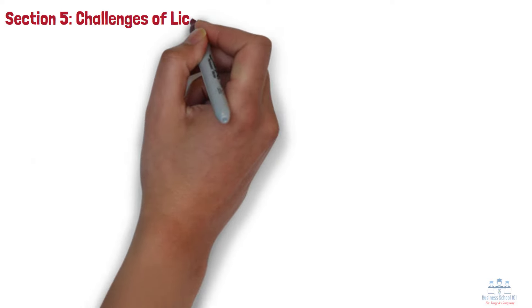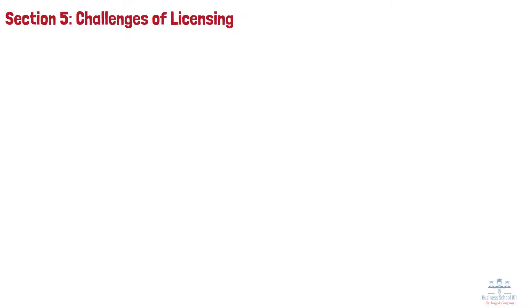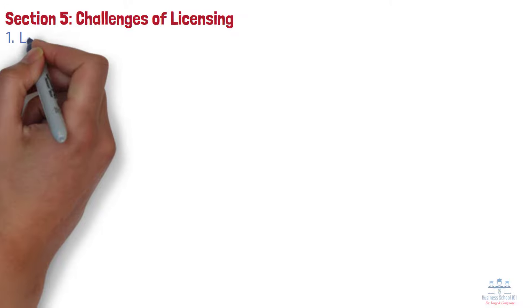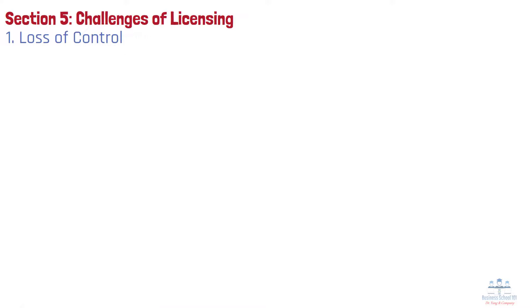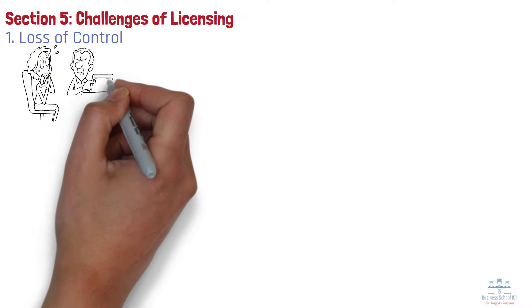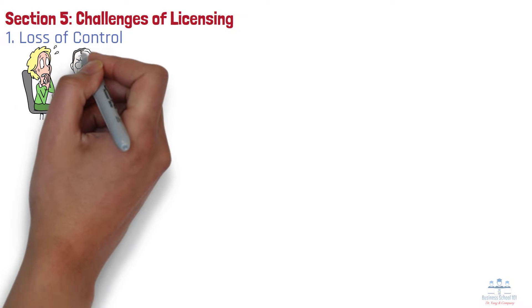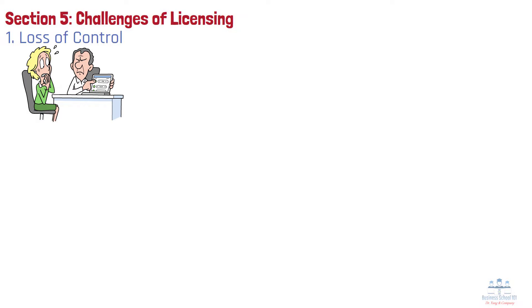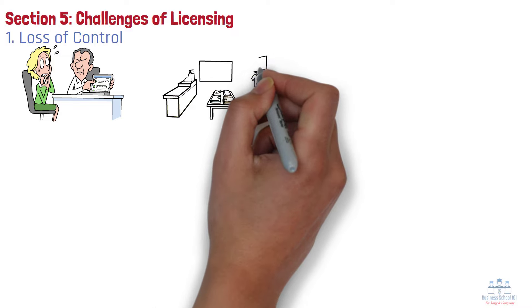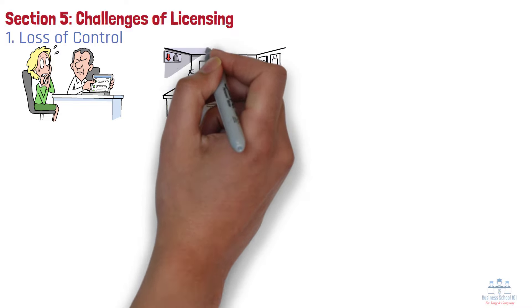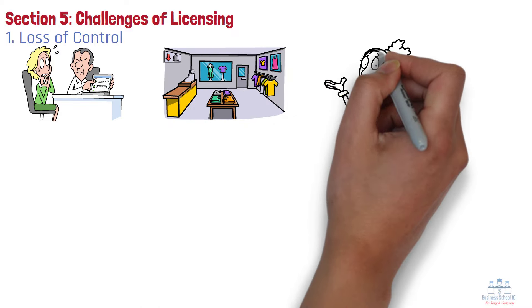Section 5: Challenges of licensing. While licensing offers significant advantages, it also comes with challenges. Number 1: Loss of control. Licensors risk losing control over how their intellectual property is used, leading to possible brand dilution or inconsistent product quality. For example, if a luxury fashion brand licenses its name to a budget manufacturer, it risks damaging its premium image.